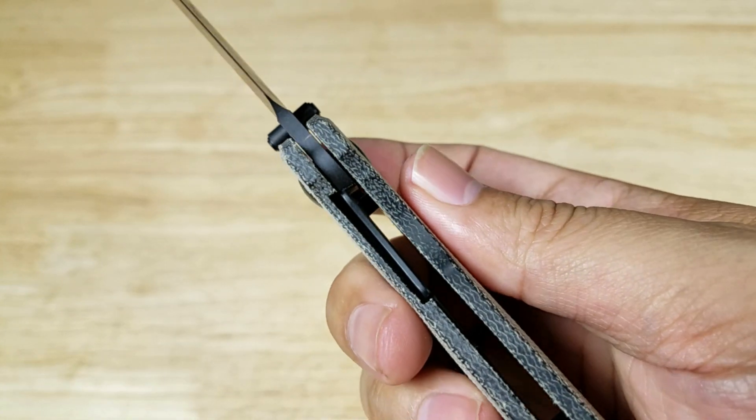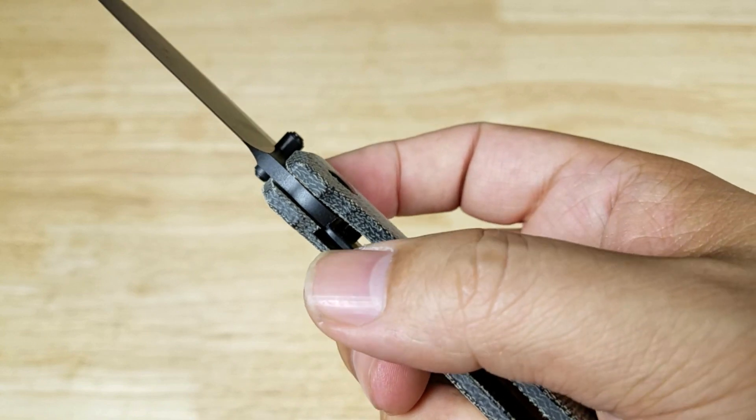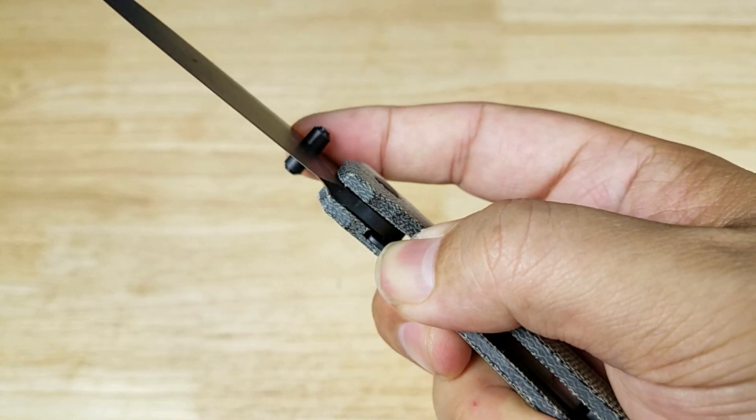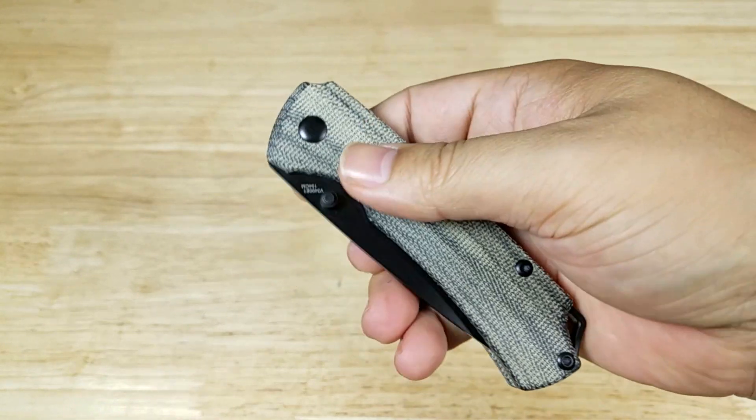This is a liner lock. You can see that here. This lever just kicks out to the side when you open the blade and then to close it, you just move it on the side. Easily closeable with one hand.